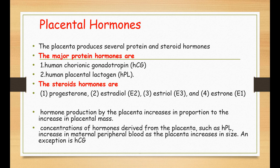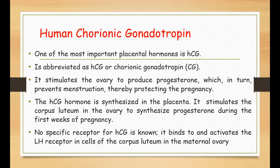When the placenta size increases during pregnancy, the production of these hormones also increases proportionally — except for human chorionic gonadotropin, which peaks at the end of the first trimester. Human chorionic gonadotropin is synthesized in the placenta and is one of the most important hormones for maintenance of normal pregnancy.